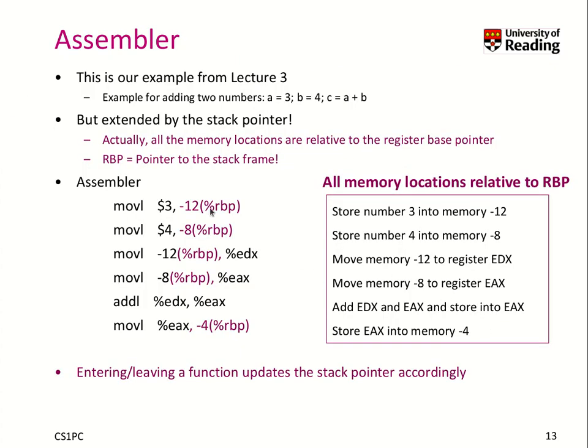Now we can have a look at the assembler. We take here the example from our lecture 3, where we had two numbers, a equals 3, b equals 4, and then we tried to add them and store them into a new variable, c. In our original example, we simplified this. Now, we can extend it by something called the stack pointer.